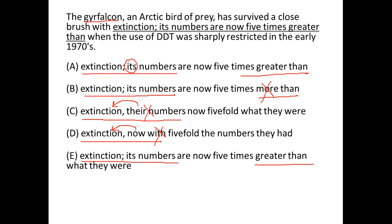Now we are left with A and E. In E it says 'its numbers,' so 'its' refers to Garry Falcon. So Garry Falcon's numbers are five times greater than what 'they' refers to — numbers. So we are comparing Garry Falcon's numbers with numbers, which makes the comparison wrong. Hence A is the correct answer. Thank you.